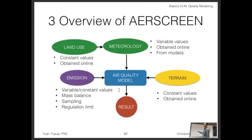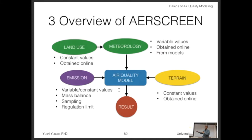Land-use constants can be obtained online from tables. Meteorology values are variable because temperature changes with season, time of day, and so on — you can obtain this online or from numerical weather forecasting models (NWP models). There's an optional section called WRF — Weather Research and Forecasting — where even without real station meteorology data, you can model it using these NWP models. This represents a coupling of models.